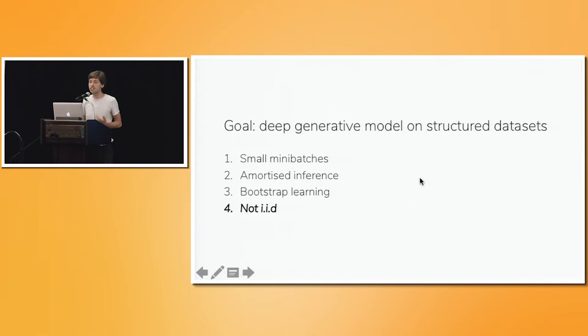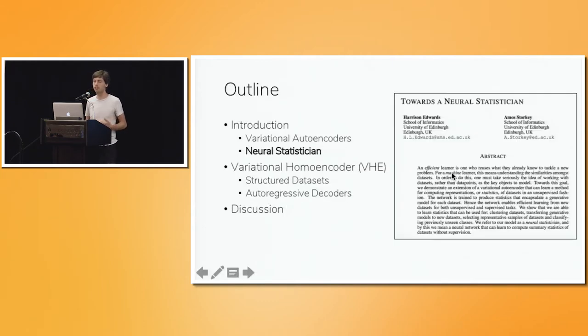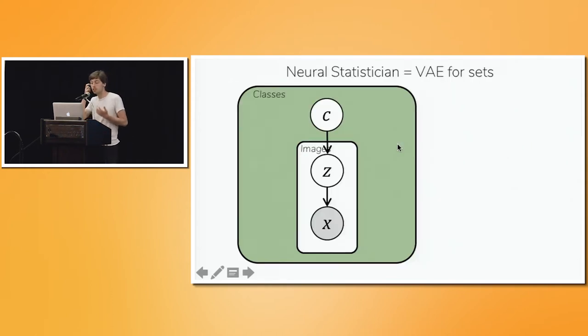So our goal is to find ways to train these deep generative models, keeping all of the great advantages that variational autoencoders afforded us, but doing away with this IID assumption. And a really terrific paper was published last year called Towards a Neural Statistician, aiming to do something just like this. They focus on training models of data sets that have a class structure. And the way they do it is to try and reframe the problem to be like training a variational autoencoder.